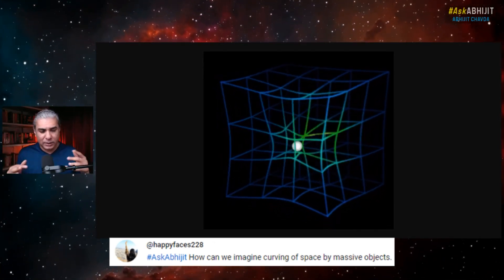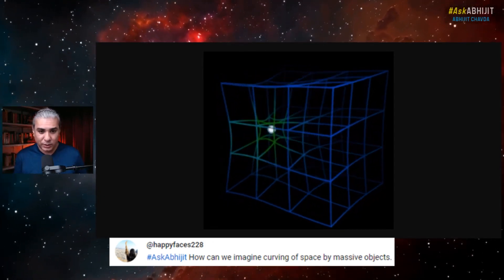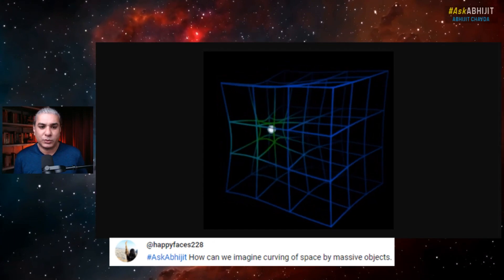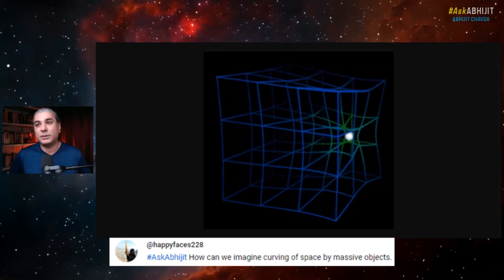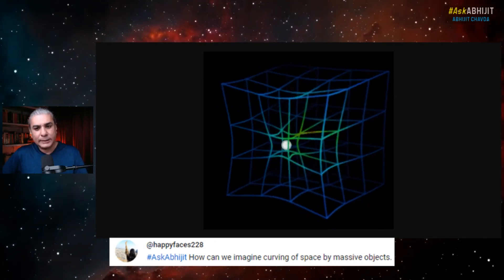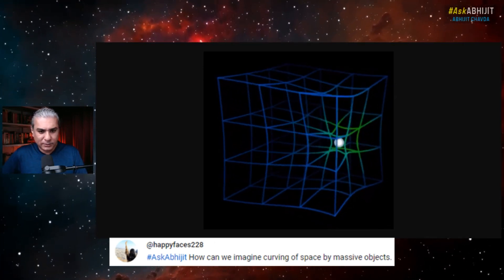We can only see three dimensions; we can't visualize four dimensions. At least I can't. My brain isn't that great. I can only see things in three dimensions. So imagine this was four-dimensional—it would kind of work like this.